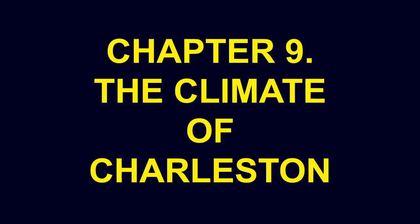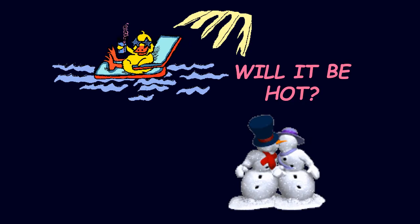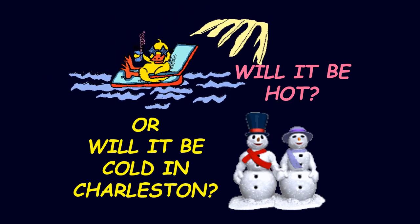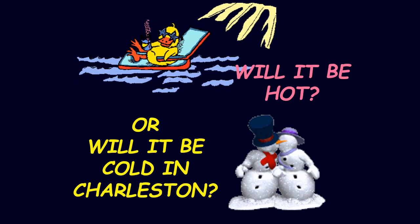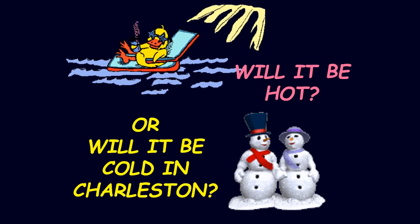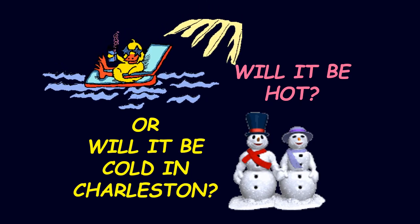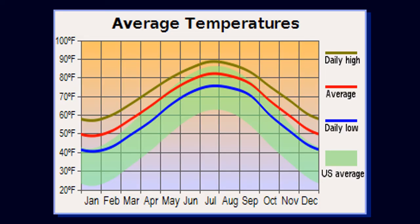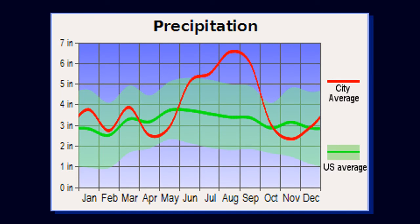Chapter 9: The Climate of Charleston. This is a graph of the average high and low temperatures in Charleston throughout the year. This is a graph of the rainfall in Charleston throughout the year. We see that the rainfall is comparable to the U.S. average, except for the summer months when intense thunderstorms push the rainfall to almost twice the U.S. average.